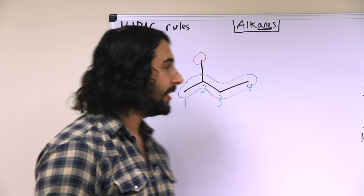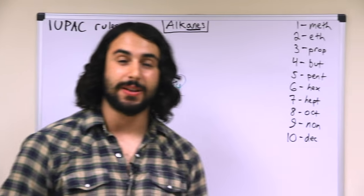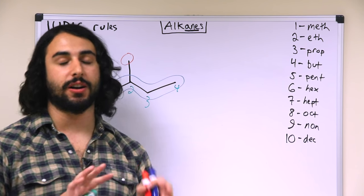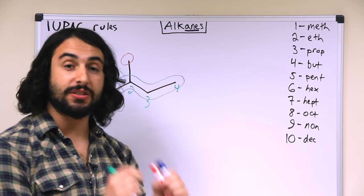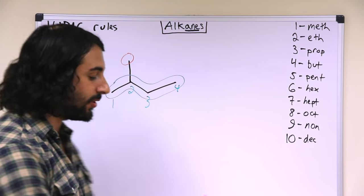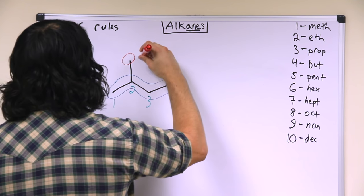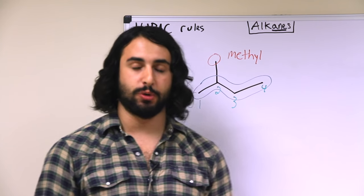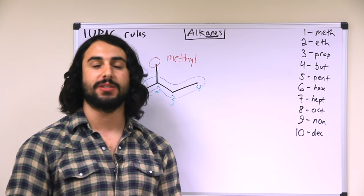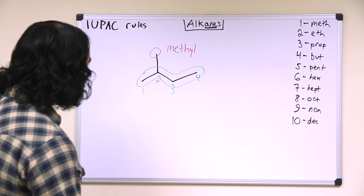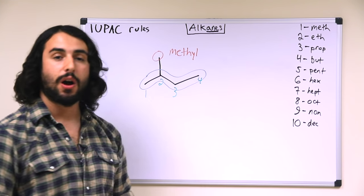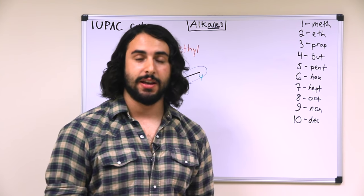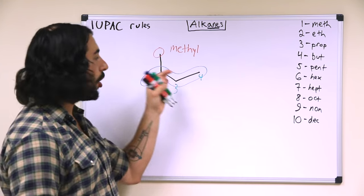We're going to use the same prefixes that we already know, but we're going to change the suffix. So this is a 1-carbon substituent, so we're going to use the prefix meth. But this is not a methane group because methane would be a completely separate 1-carbon molecule. This is a substituent coming off of the main chain, so we are going to call this a methyl group. If you had a 2-carbon substituent, it would be an ethyl group, 3-carbon substituent would be propyl, and so forth. So now we know that we have a main chain of 4 carbons, making this a molecule of butane, four for butane, and we have a methyl group on carbon two.